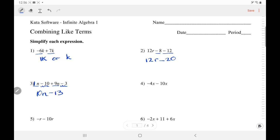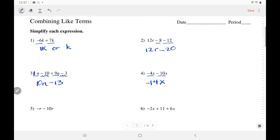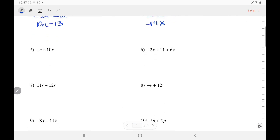Here, we're going to add negative 4 and negative 10. More negative, so negative 14x. Negative 1r, again, there's a negative invisible 1 there. Negative 1r, negative 10r, more negative, negative 11r.